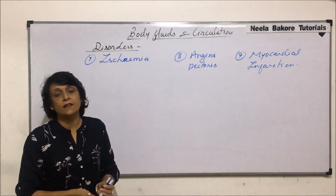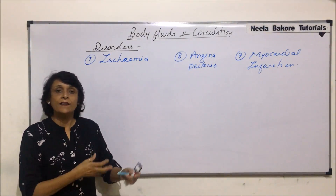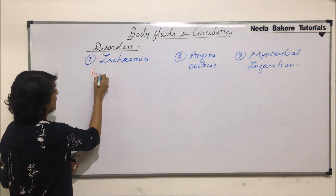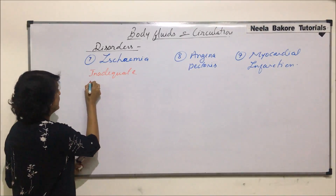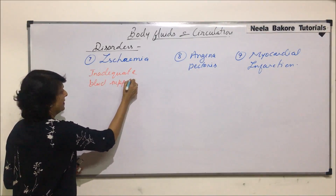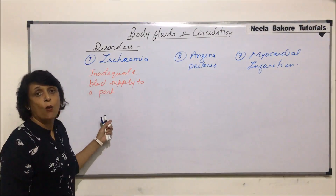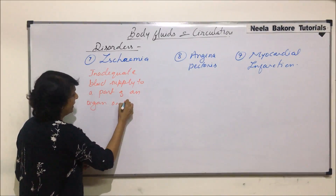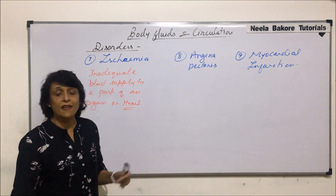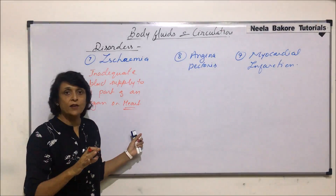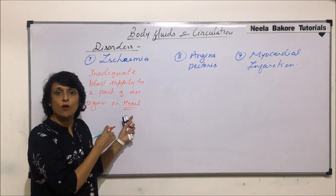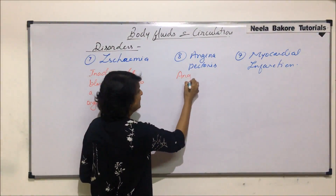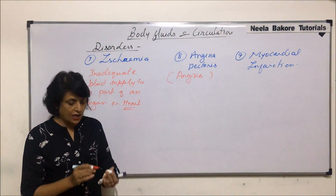These three things are pretty much related to each other and the end result is the same. Ischemia is inadequate blood supply to a part — that part can be any organ including the heart. Whenever blood supply is less or inadequate to any part of the body or the heart, that is called ischemia. Here we are mainly focusing on inadequate blood supply to the heart.